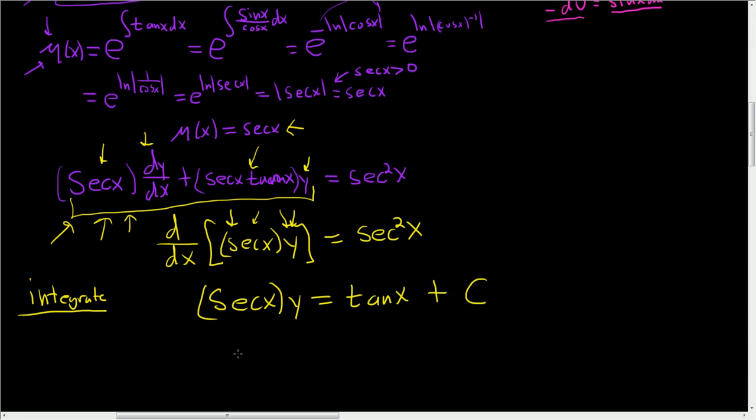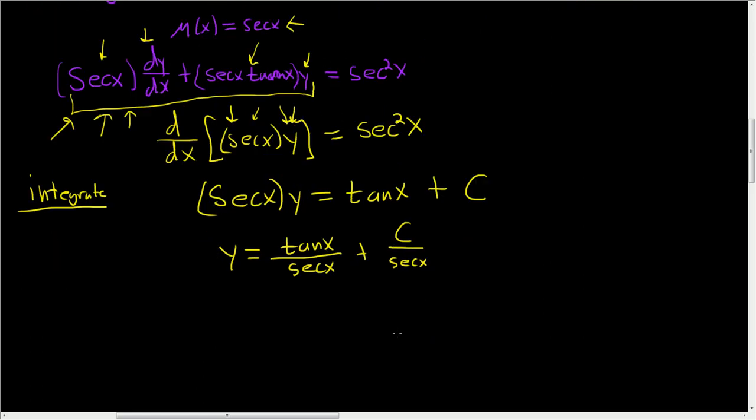To finish, simply divide by secant x, so y is equal to tangent x divided by secant x plus c over secant x. And I believe this can be simplified. Let's try to do that. So we can write tangent as sine x over cosine x. And we can write secant as 1 over cosine x.